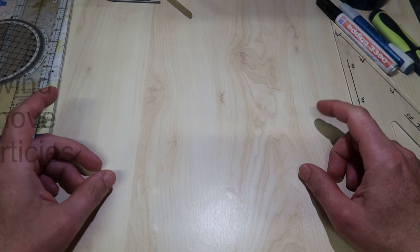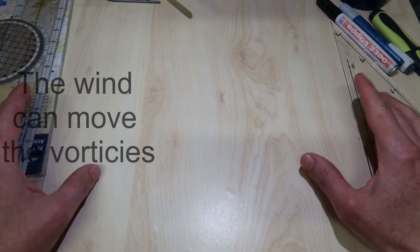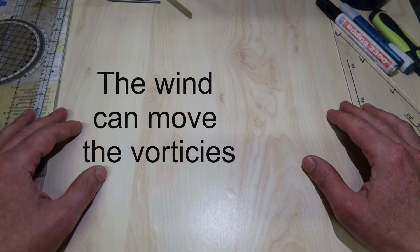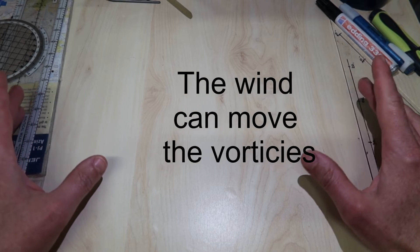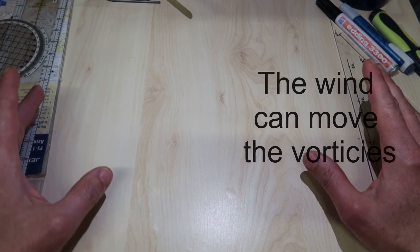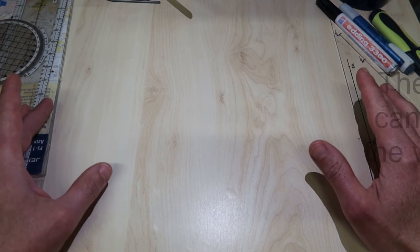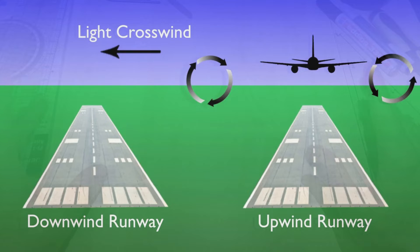Strong winds and crosswinds will dissipate or move the vortices. The worst wake turbulence hazard generated by fixed-wing aircraft occurs with a light 5-knot crosswind flowing across the runway.